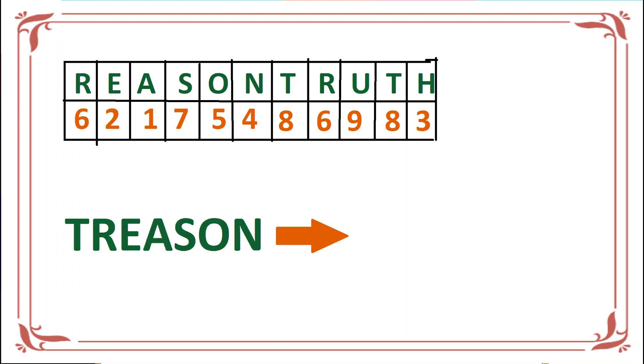Using this table, we will define the code for TREASON. For T we have 8, then R is 6, E is 2, A is 1, S is 7, O is 5, and N is 4.